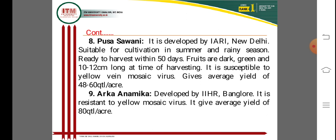Arka Anamika is a very important variety developed by IHR (Indian Institute of Horticultural Research), Bangalore. It is resistant to YVMV and gives an average yield of 80 quintals per hectare — a very high yield variety. This high yield makes it very important for farmers seeking more income from smaller areas, as 80 quintals of okra can be produced from one hectare.